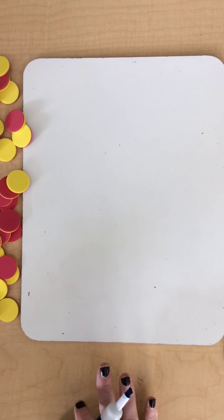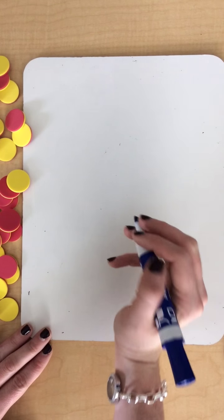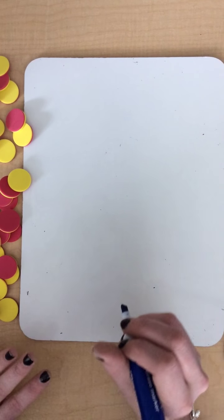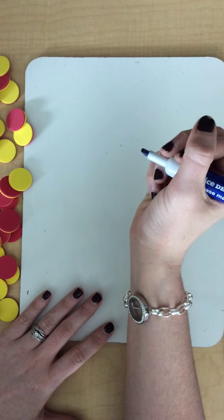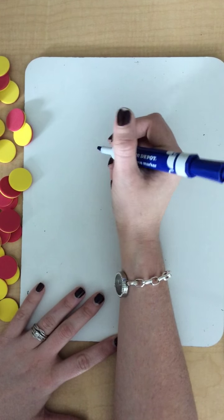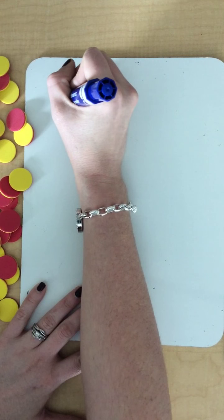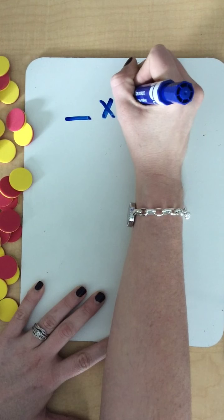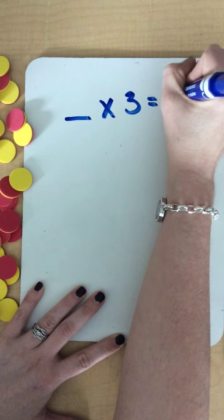We would start off by step number one, choosing one of the expressions. I'm going to choose a different expression than one of the ones on the list, but you can go ahead and choose one of the ones on the list. So the expression I'm going to choose is blank times 3 equals 27.